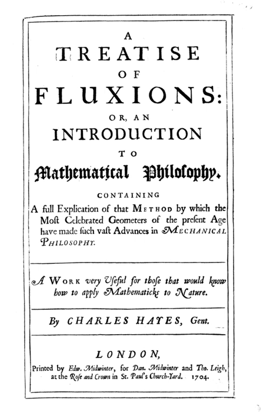Charles Hayes was an English mathematician and chronologist, author of an early book on the method of fluxions. He was also a long-term official and defender of the Royal African Company, one of the earliest slave trading companies established in Britain.